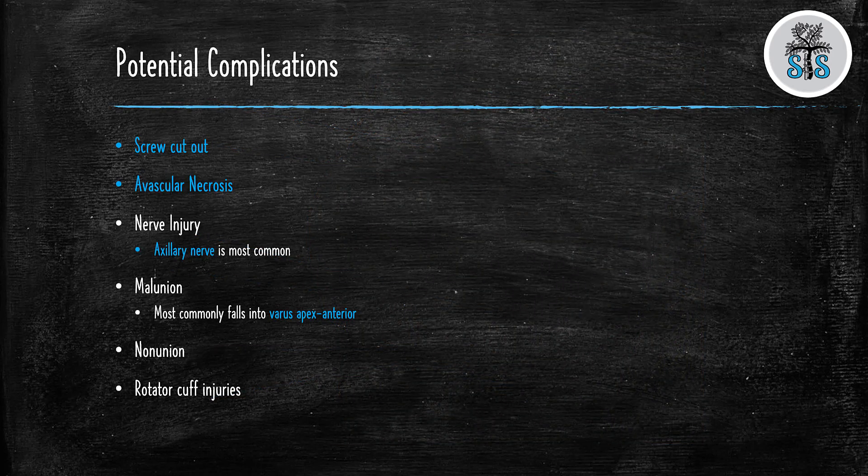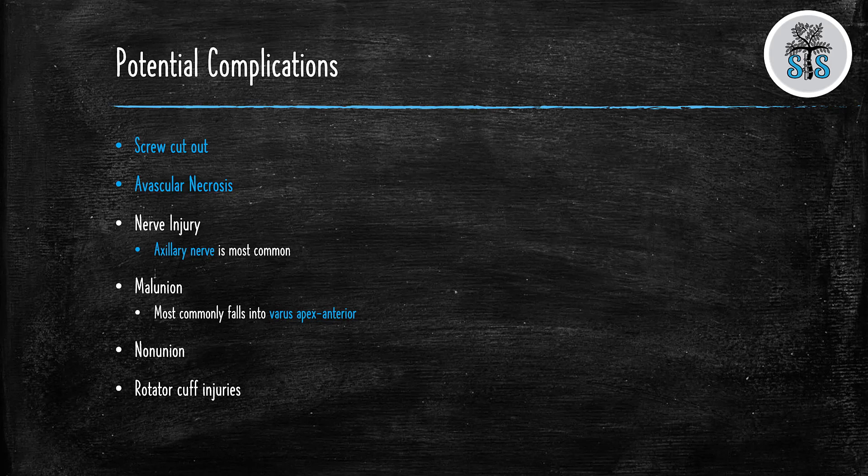So lastly, what are some potential complications of proximal humerus fractures? Well, we're going to start with if you actually go and fix this fracture. Screw cutout is the most common complication when dealing with open reduction and internal fixation when we put a locking plate and screws on. Typically, when we have these fractures, there's a lot of comminution. And if the screws aren't getting as good fixation as we believe, then these are going to pull out without much resistance.